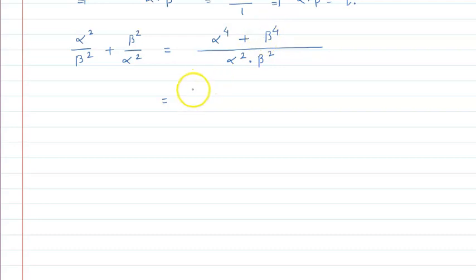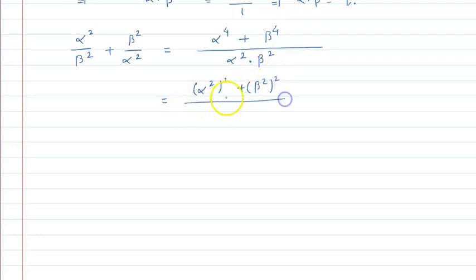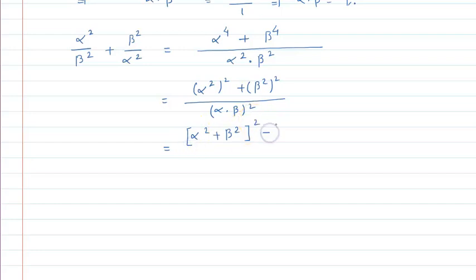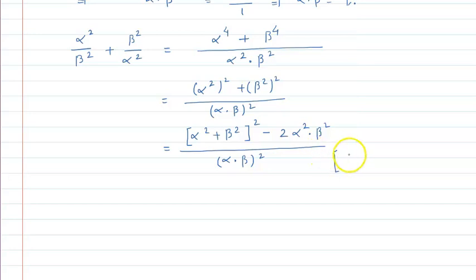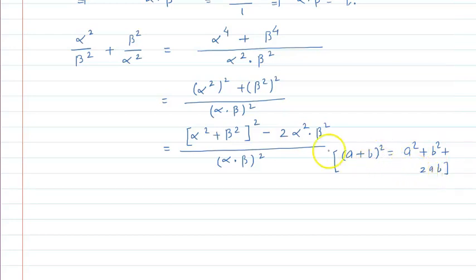α⁴ + β⁴ को लिखा जा सकता है (α²)² + (β²)², divided by (αβ)². इसे हम लिख सकते हैं: (α² + β²)² - 2α²β², divided by (αβ)². यहाँ identity use की: a² + b² = (a+b)² - 2ab. यहाँ a की जगह α² और b की जगह β² लिया.